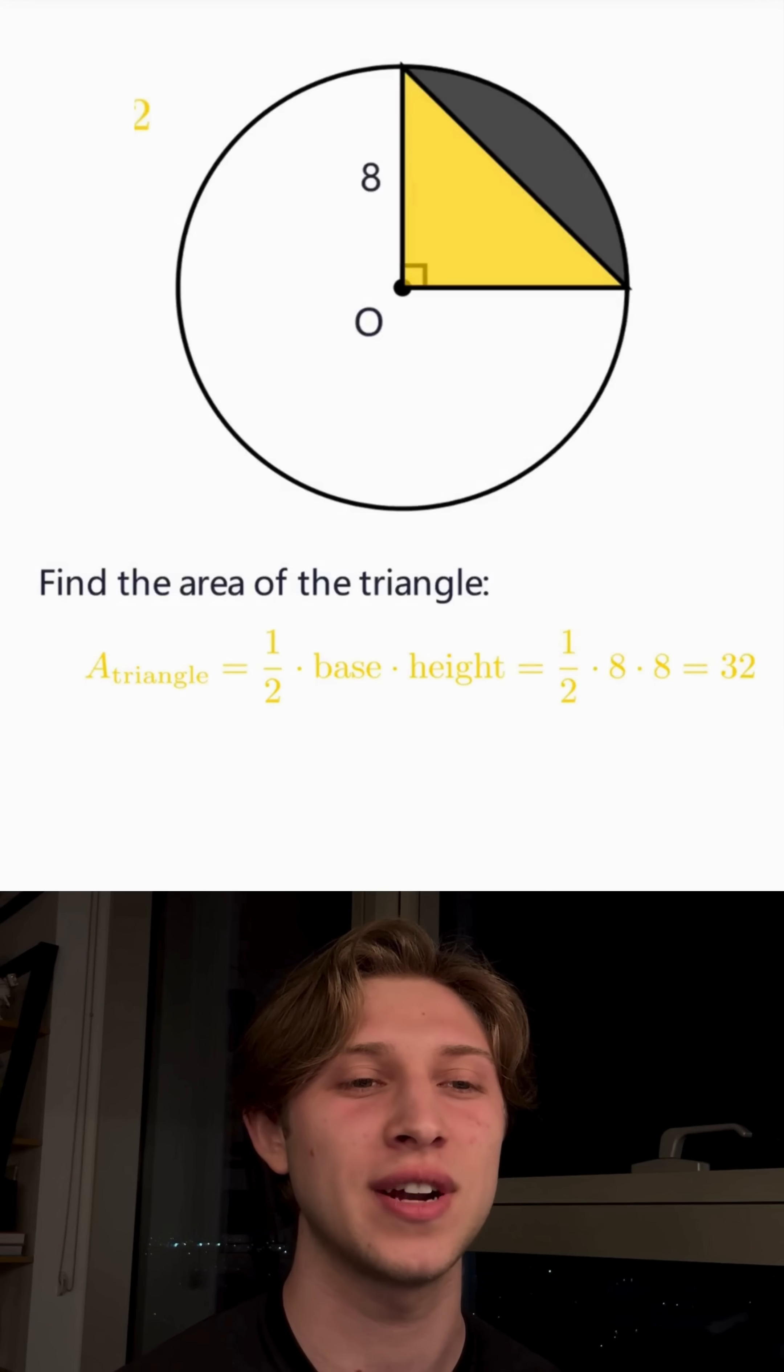The height is 8, and since that's also the radius of the circle, it's 8 again. So one half times 8 times 8, that gives us 32.